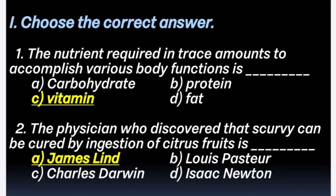1st section: Choose the correct answer. 1st question: The nutrient required in trace amounts to accomplish various body functions is — Answer is option C: Vitamin.